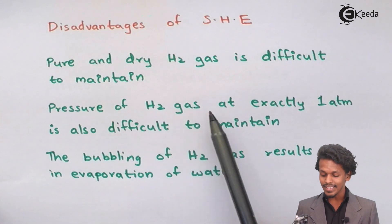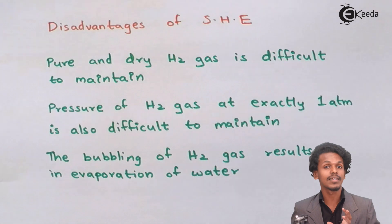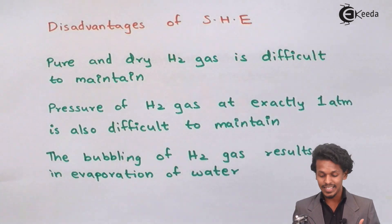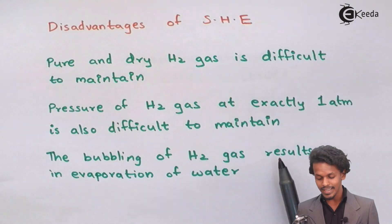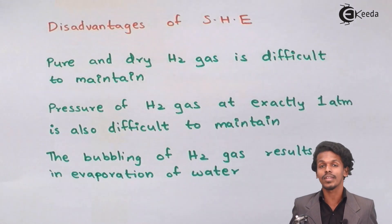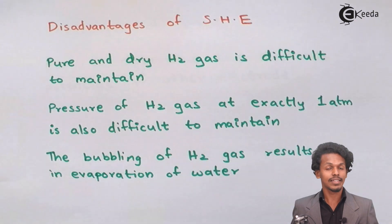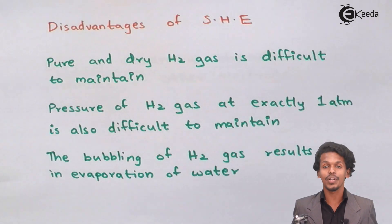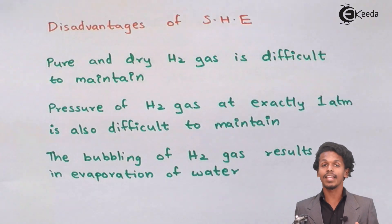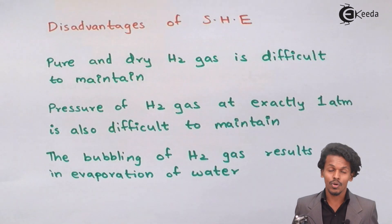Another disadvantage is that maintaining the pressure of H₂ gas at exactly one atmosphere is also difficult. Furthermore, the bubbling of H₂ gas results in the evaporation of water, which changes the concentration of the solution from its required one molar level. Because the concentration changes, the cell potential is adversely affected and we cannot get a proper EMF of the other electrode or the overall cell.